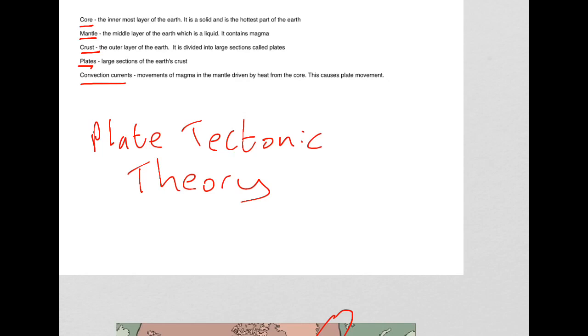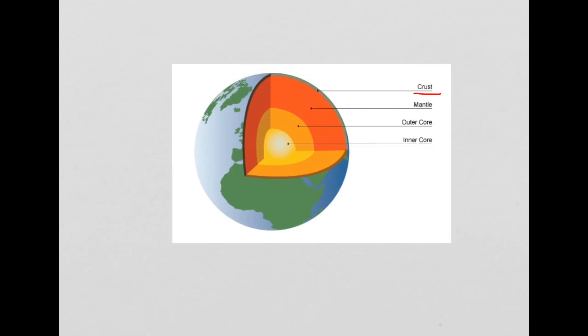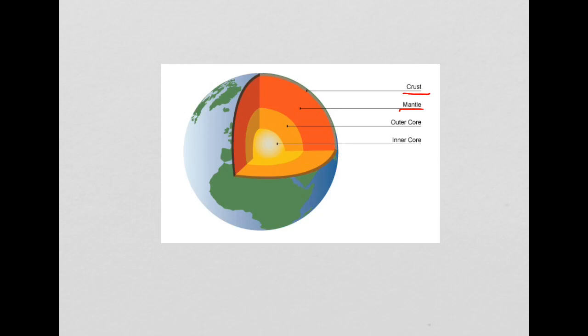Convection currents are movements of magma in the mantle driven by heat from the core, and this causes plate movement. The convection currents occur in the mantle in this area here, and they cause the plates or the crust to move.